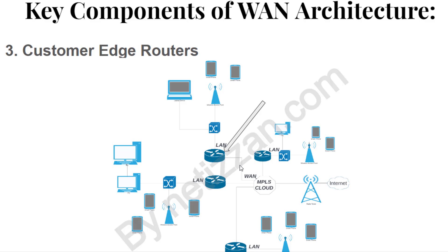The next component is the Customer Edge Router. This can also be referred to as a Home Gateway, but it is usually referred to as a Home Gateway when internet service is delivered to just a home. In this case, we are looking at a Wide Area Network, so it is more accurately referred to as a Customer Edge Router. A Customer Edge Router is responsible for forwarding traffic from a particular LAN to the Wide Area Network and then to the Internet — forwarding traffic from all host devices on that specific local area network.